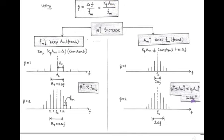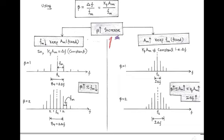Now, as ΔF increases, and we know that in wide band FM the transmission bandwidth is 2·ΔF, the transmission bandwidth increases, and accordingly the number of sidebands increases. So in both cases, as modulation index β increases, the number of sidebands also increases.